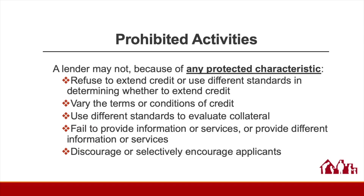For example, we have enforcement actions that we've pursued based on lenders offering to lend a lower amount to a woman on maternity leave than they would to a similarly situated woman who was at work. But the law also covers more subtle points as well. The law prohibits failing to provide information or services, or providing different information or services, regarding any aspect of the lending process, including credit availability, application procedures, or lending standards. It also prohibits discouraging or selectively encouraging applicants with respect to inquiries about or applications for a loan. Every aspect of a lending agent's interaction with a borrower or prospective applicant matters, including the softer elements like what information the agent requests of the applicant, what information the agent offers the applicant, and what level of inquiry or investigation is conducted into their creditworthiness.